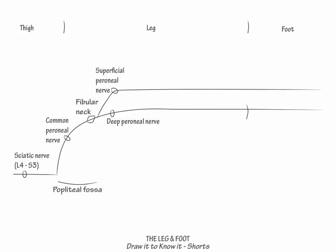Now show that the tibial nerve continues straight down through the posterior leg to innervate the muscles of the posterior leg and plantar foot.